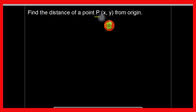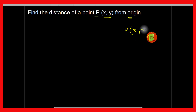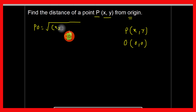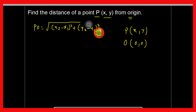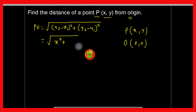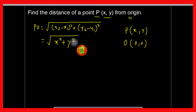The next question is: find the distance of a point P whose coordinates are x and y from the origin O whose coordinates are 0 and 0. We use the distance formula: PO equals square root of x2 minus x1 squared plus y2 minus y1 squared. So PO equals square root of x minus 0 squared plus y minus 0 squared, which equals square root of x squared plus y squared.